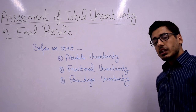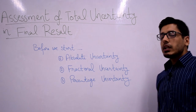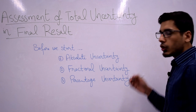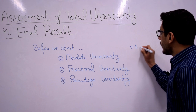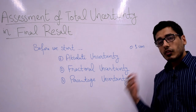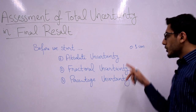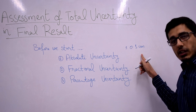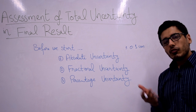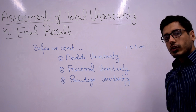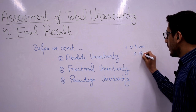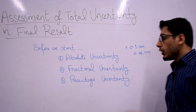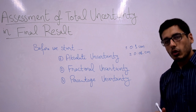Let's take some examples. In the case of a meter rod, the least count is 0.1 centimeter, so the absolute uncertainty of the meter rod is going to be plus or minus 0.1 centimeter. Taking the example of vernier calipers, the least count is 0.01 centimeter, so the absolute uncertainty for vernier calipers is going to be plus or minus 0.01 centimeter.